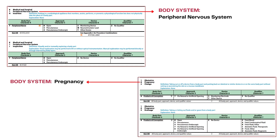This is how the body system value looks in the PCS tables. For the first table, peripheral nervous system is the body system value, and for the second table, pregnancy is the body system value for the obstetrics section.